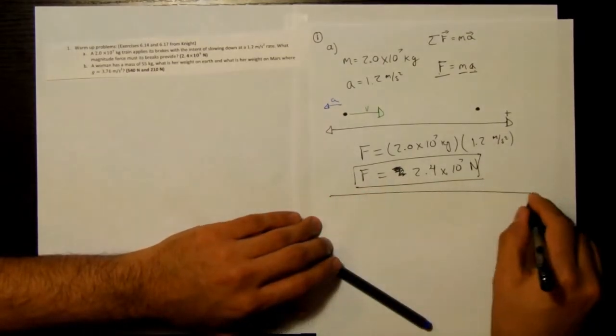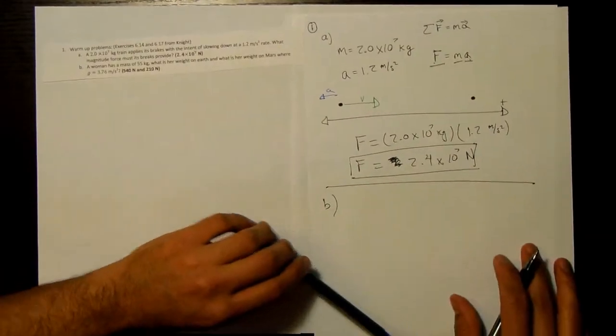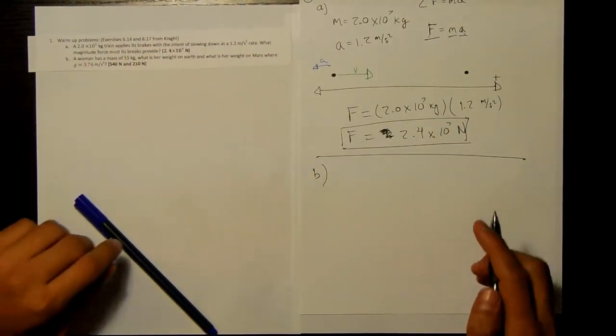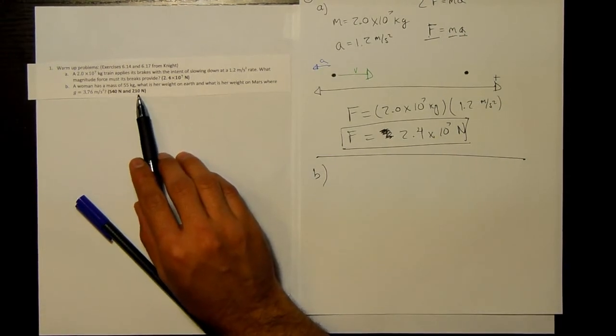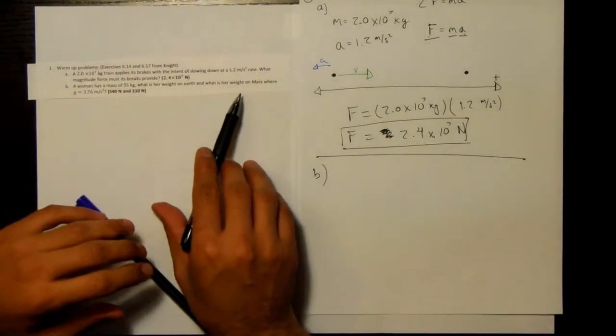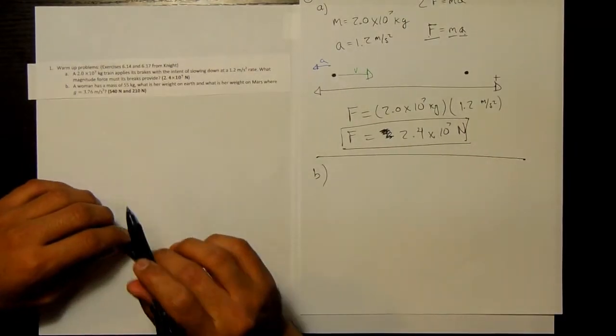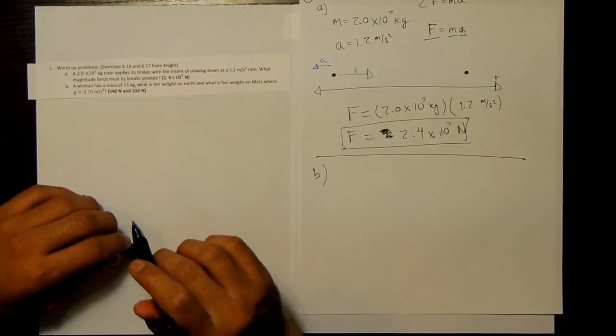Okay, for part B. Let's read part B. A woman has a mass of 55 kilograms. What is her weight on Earth and what is her weight on Mars, where g equals 3.76 meters per second squared?